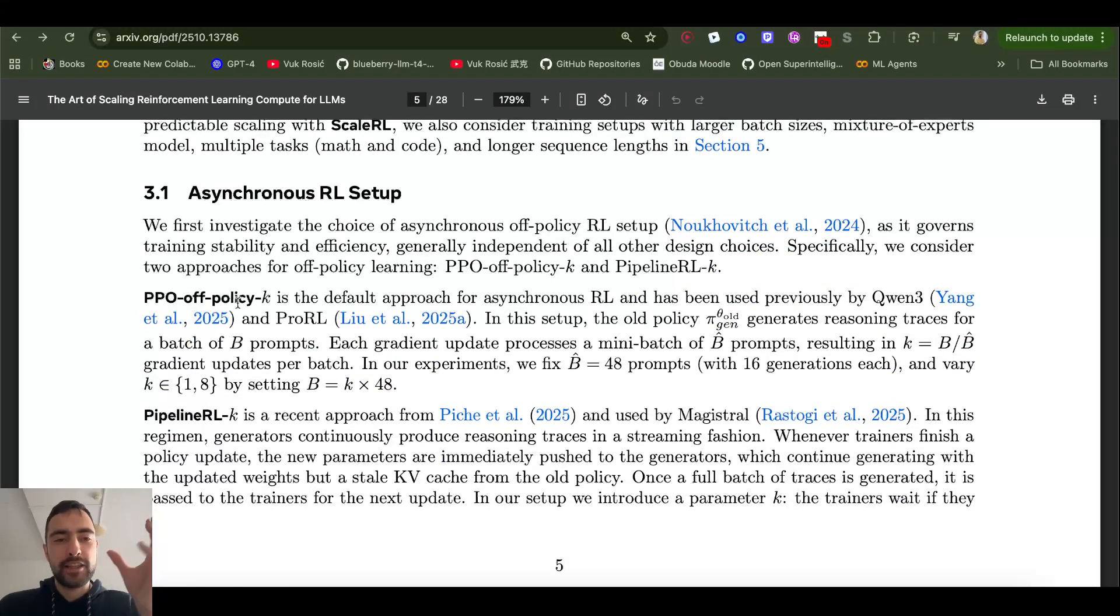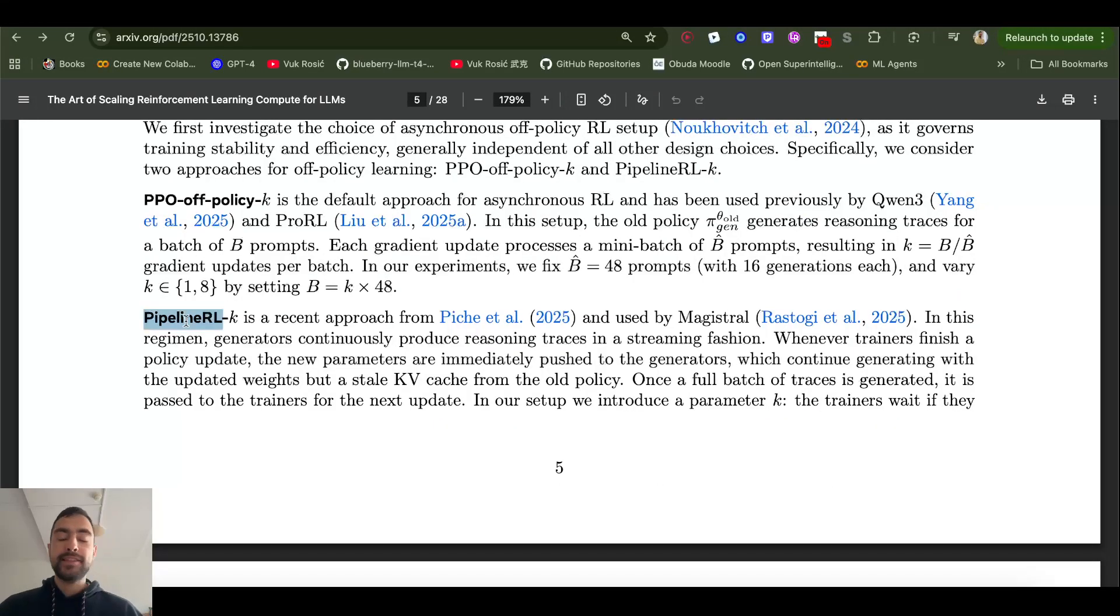First, they compare two kinds of data loading and policy update methods. So first is this PPO off-policy, where the model just generates a bunch of answers to the question. And after it generates all of the answers, thousands of answers, then all of them get processed. And then the model is updated based on which answers are correct, which are not correct, the rewards and stuff. But the main point here is that it first generates a bunch of answers and then it's updated. And then pipeline RL doesn't wait for so many examples. It works in parallel with generation and training works in parallel. So generation generates samples, sends them to training. And then this guy updates weights and then pushes them back. And then this generator uses new weights. So it's more parallel. It's like this guy is producing these guys, using it, evaluating, training this guy.